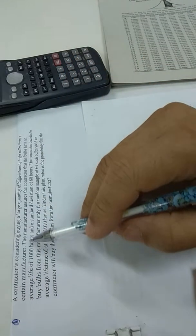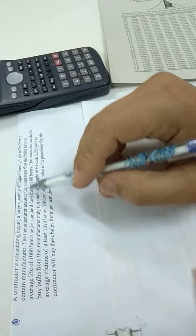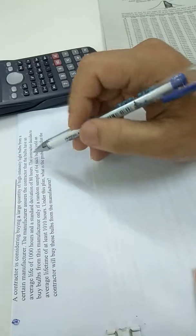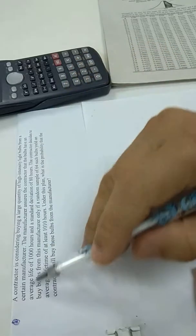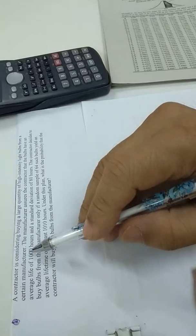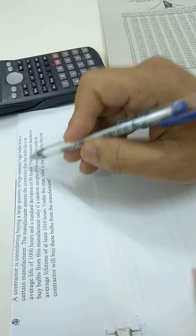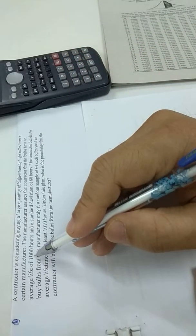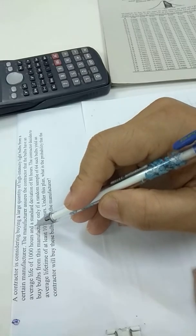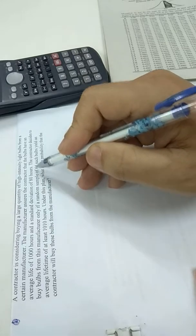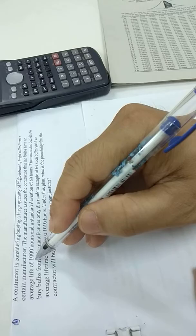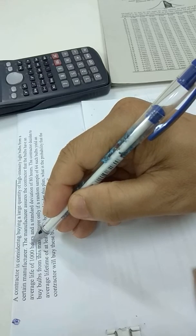A contractor is considering buying a large quantity of high-intensity light bulbs from a certain manufacturer. The manufacturer assures the contractor that the bulbs have an average life of 1000 hours and standard deviation of 80 hours. This is the mean.